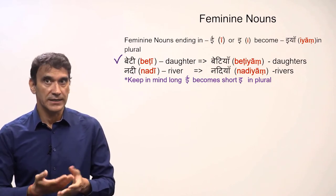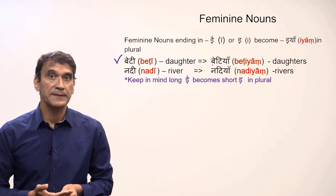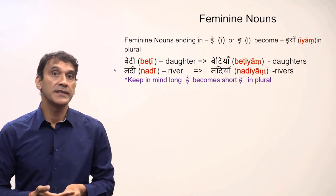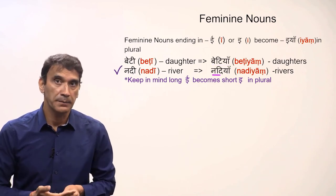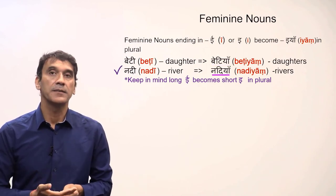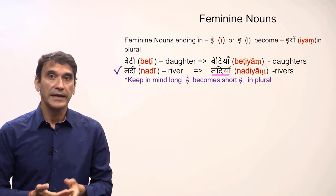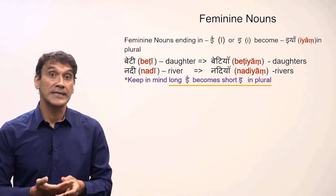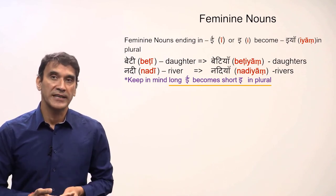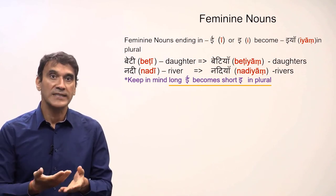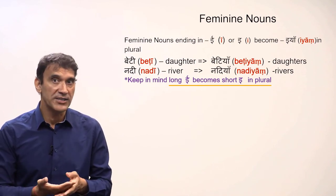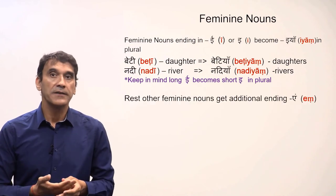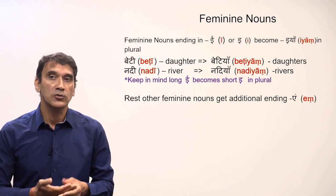For example, 'beti' meaning 'a daughter' becomes 'betiyan' in plural meaning daughters. 'Nadi' meaning 'river' becomes 'nadiyan' meaning rivers. Keep in mind that the long 'ee' in singular becomes short in plural — you can see that in 'betiyan' and 'nadiyan'.